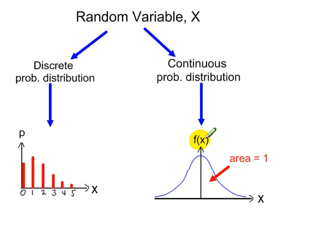And this, f of x, is a probability density function — it's like the equation of this curve here.